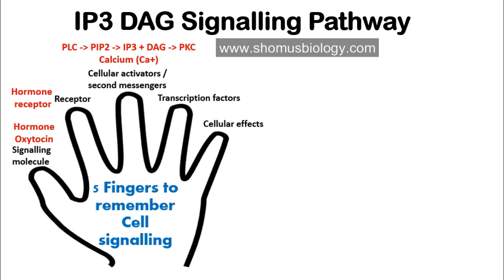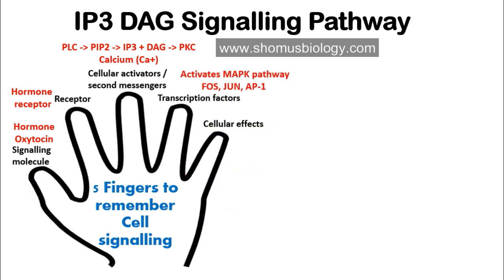The fourth parameter is transcription factors. The IP3/DAG signaling pathway can activate and influence the MAP kinase pathway and can also activate the Ras protein, a component of the MAP kinase pathway. The common transcription factors in the IP3/DAG pathway are Fos, Jun, and AP1. These are particularly relevant in hormone-mediated signaling like oxytocin signaling.